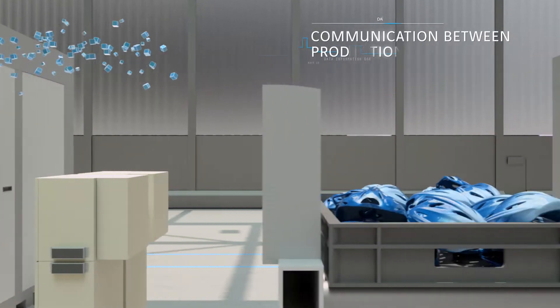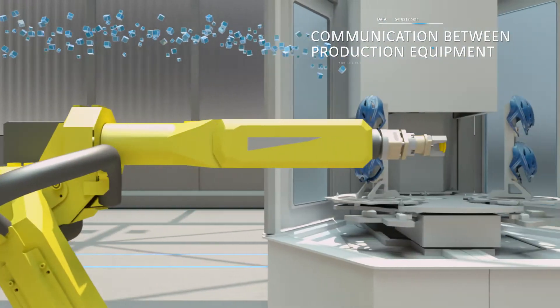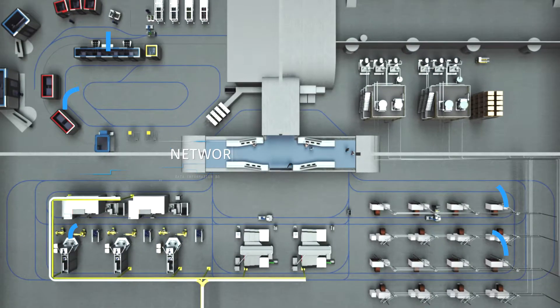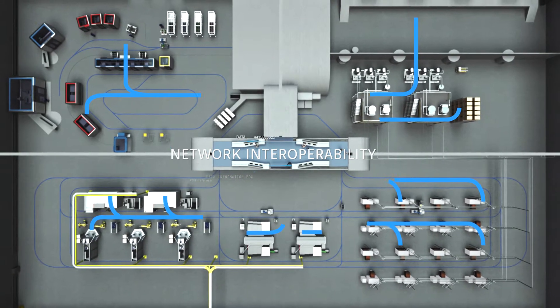Production equipment items communicate with each other. They interact with their environment, using solutions that enable interoperability between networks.